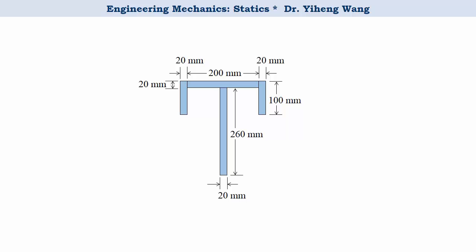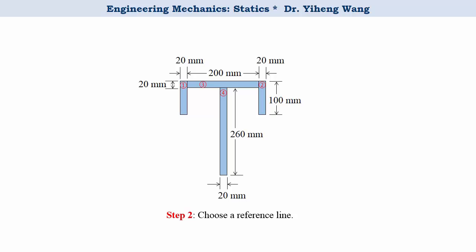The very first step is to define our component areas. Sometimes there are multiple ways to do it, but for this example it is quite obvious that we want to choose these four rectangles as the component areas. Location is always described in relation to some reference, so the second step is to choose a reference line. I always choose the bottom of the shape to be the reference line — this is where the vertical coordinate y equals zero.